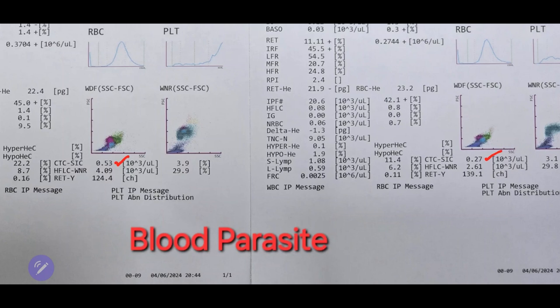Actually, this value has been around for a while, but it wasn't commonly used because the RET value is more precise. Also, remember that RBC-HE is essentially the same as MCH, but it uses a different channel.